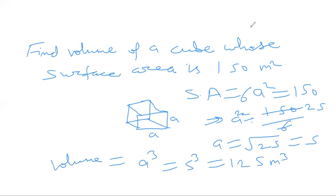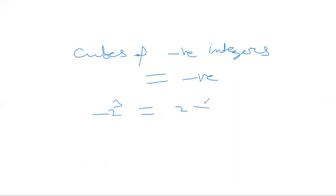So in this way you can get questions also. Now cubes of negative integers are always equal to negative only. Cube of minus 2 is minus 2 into minus 2 into minus 2, which equals minus 2 into minus 2 is 4 into minus 2.